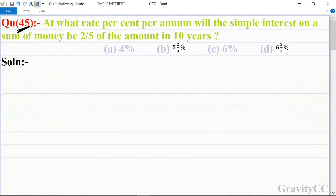Quantitative aptitude chapter simple interest question number 45. At what rate percent per annum will the simple interest on a sum of money be 2/5 of the amount in 10 years? So in this question, find the rate percent at simple interest if the sum will be 2/5 of the amount in 10 years.